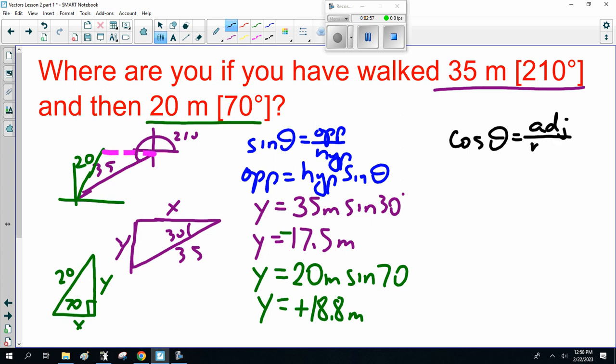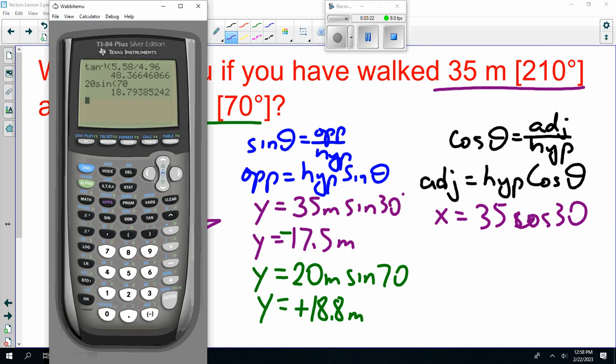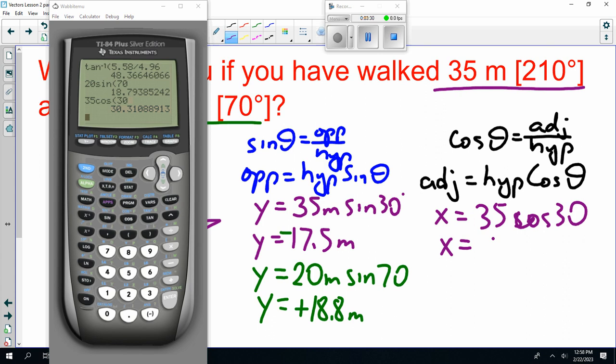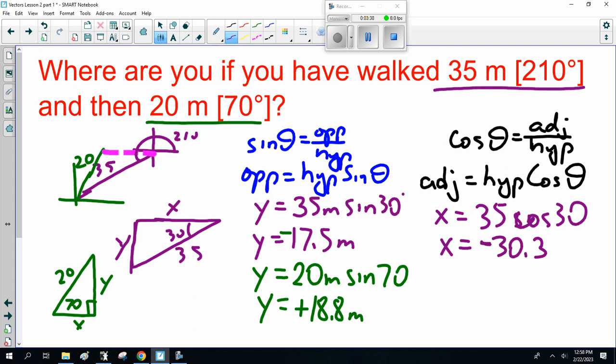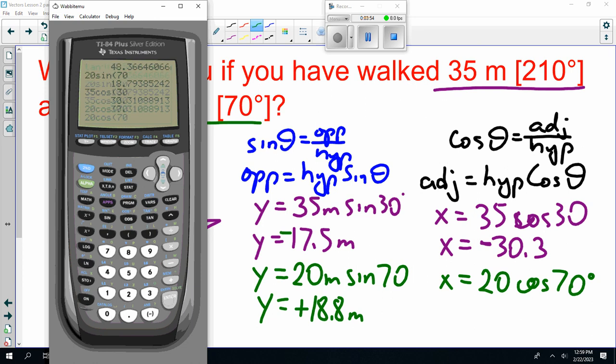Now, sorry, I'm going to change color. Cos of theta is adjacent over hypotenuse. Cross multiplying, you'll get adjacent is hypotenuse times cos of theta. Now, in the purple one, that's x, 35, cos of 30 degrees, that I can't do in my head. And, 30.3. Now, that's negative, because it's going to the left. And, in the green triangle, what happens to be my x also, that is 20 cos 70 degrees. So, 20 cos 70 is 6.8.